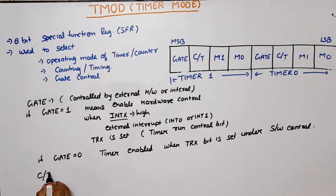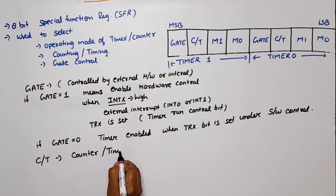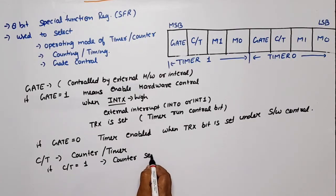C/T means counter/timer. If C/T is equal to 1, it means counter is selected. If C/T is equal to 0, it means timer is selected.